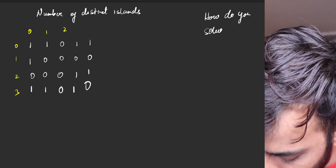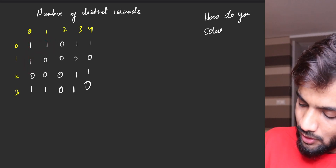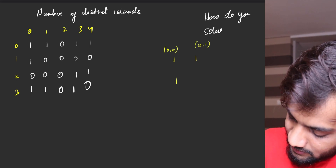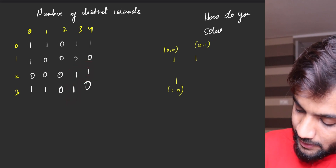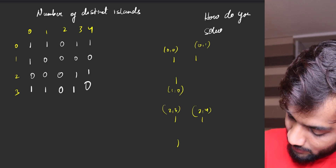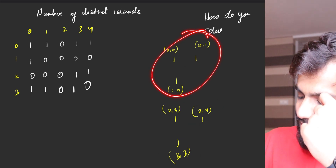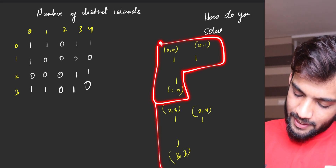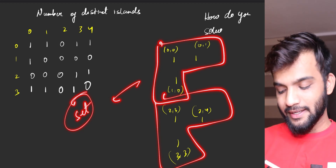Let me write down the row numbers for clarity. If I write down the coordinates of this island: 0,0 then 0,1 then 1,0. For the other island: 2,3 then 2,4 then 3,3. Now how do I store them in a set such that these two come out to be identical?